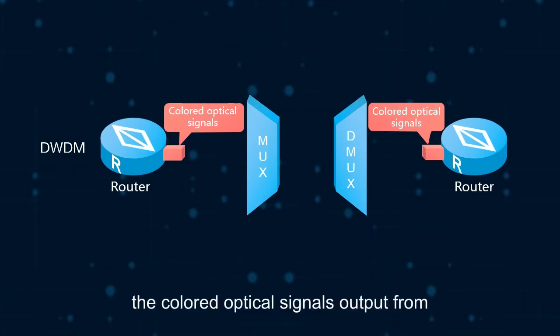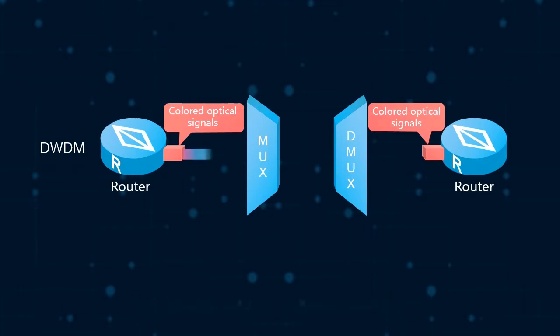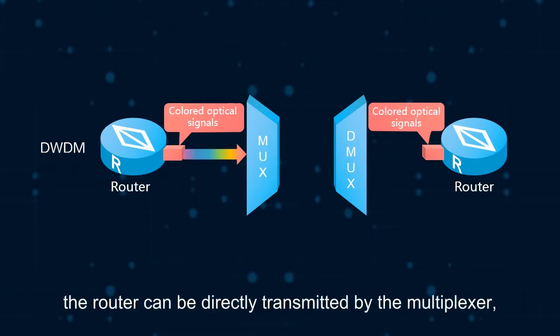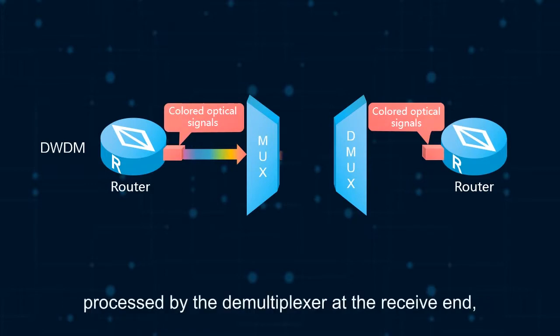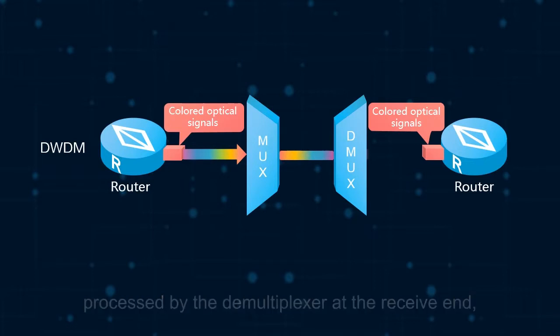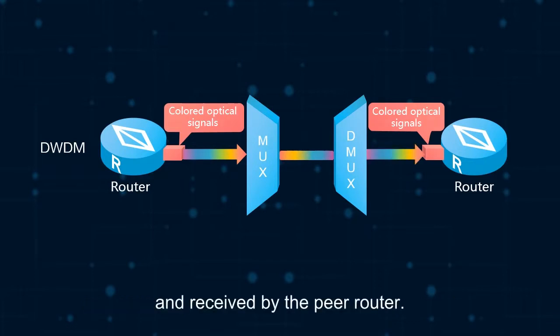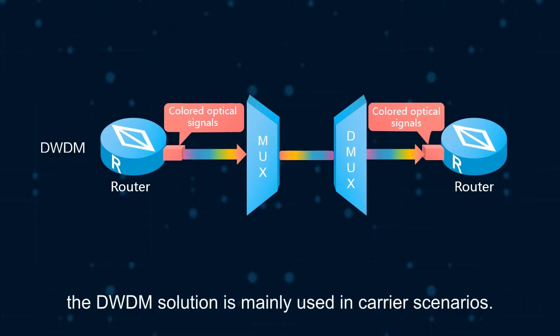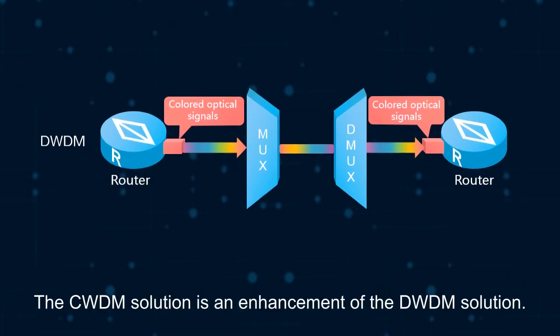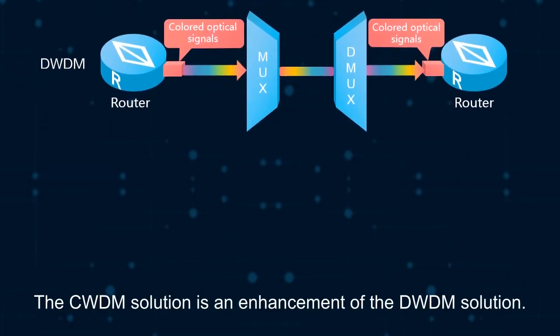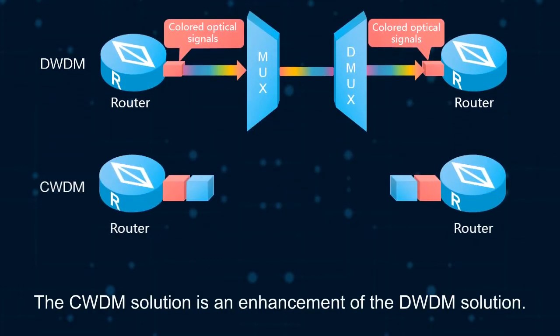In this way, the colored optical signals output from the router can be directly transmitted by the multiplexer, processed by the demultiplexer at the received end, and received by the peer router. Currently, the DWDM solution is mainly used in carrier scenarios. The CWDM solution is an enhancement of the DWDM solution.